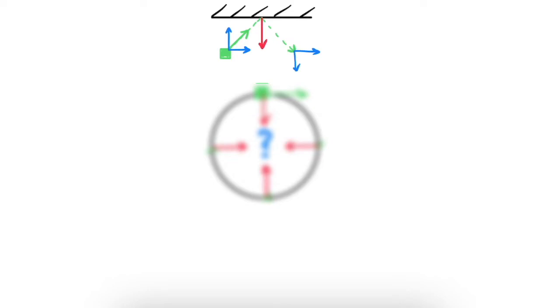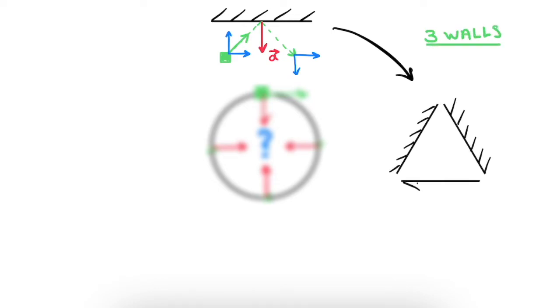With a change in velocity comes acceleration, which always points in the direction of change, in this case away from the wall. Let's now apply this principle to various setups with an increasing number of walls.